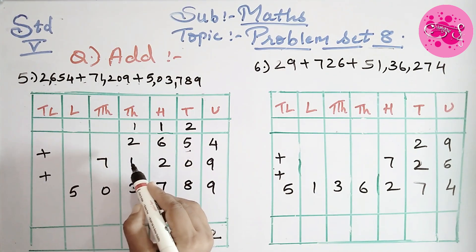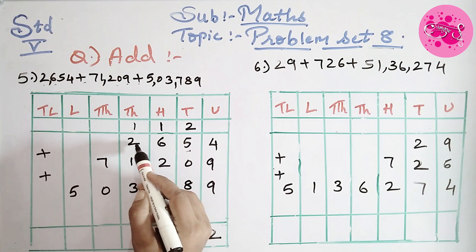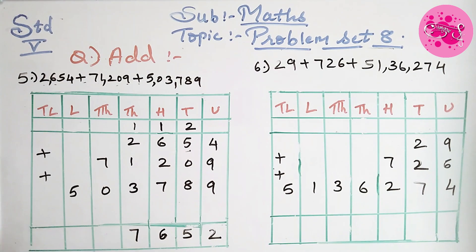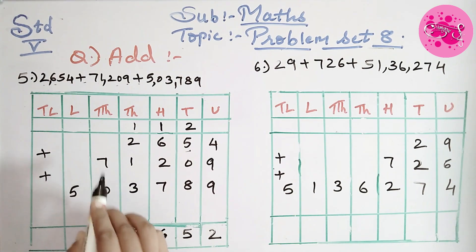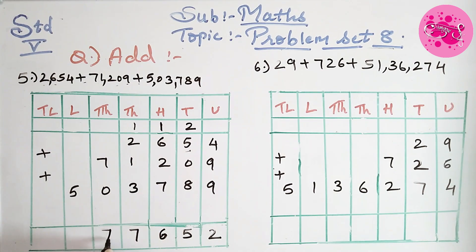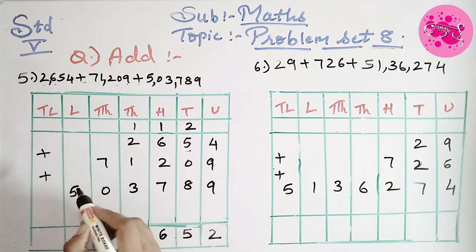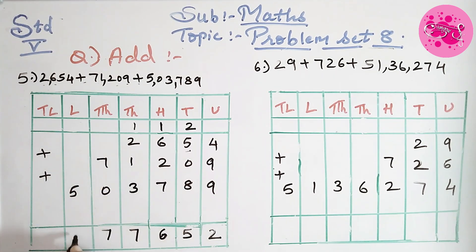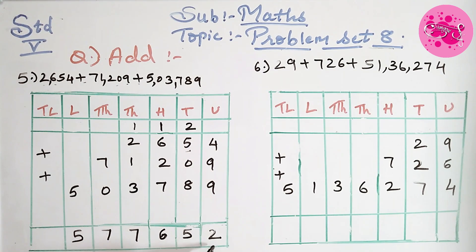3 plus 1 is 4, 4 plus 2 is 6, plus 1 is 7. Write 7 in the answer column. Next is 0 plus 7 is 7. Write 7 in the answer column. Now 5 is given and before that there are no numbers, so write 5 as it is. The answer we got is 5,77,652.